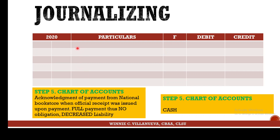You pay National Bookstore — who did you pay? National Bookstore. How much was your debt? 12,000. The acknowledgement of payment is named Accounts Payable (debited to decrease it). The cash given out is credited — in this case simplified as Cash, which could be Cash in Bank or Cash on Hand.